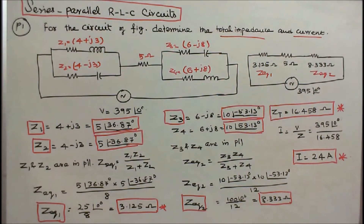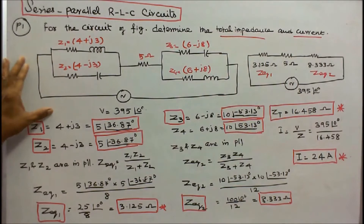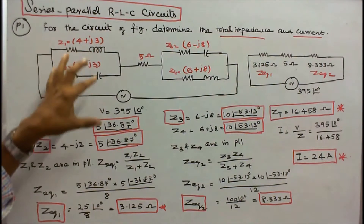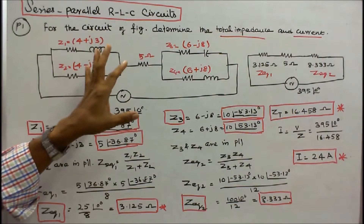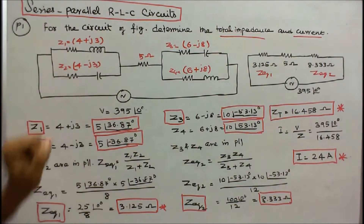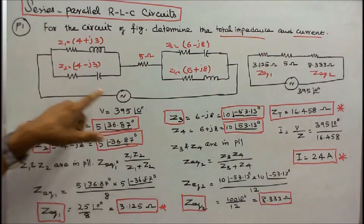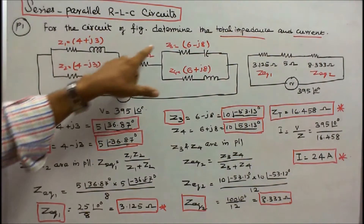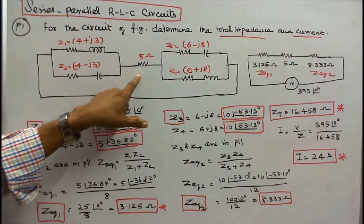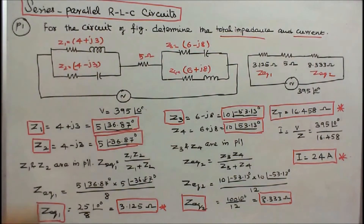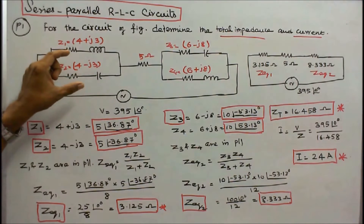In this class we work out 5 problems on series-parallel RLC circuits. Problem number 1: for the circuit of figure, determine the total impedance and current. Here, 4 impedances Z1, Z2, Z3, Z4 and one resistor are connected as shown in the figure. We have to find the total impedance and current.